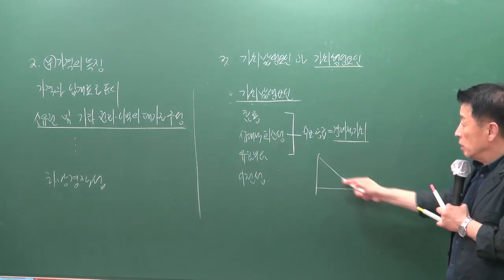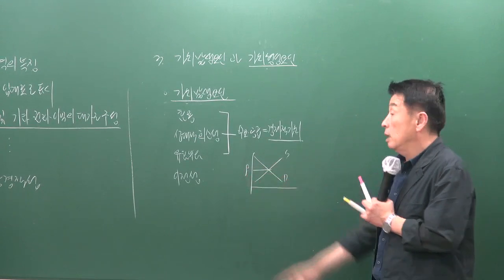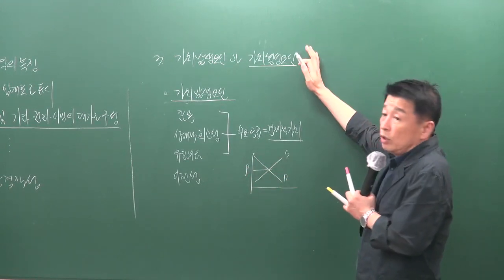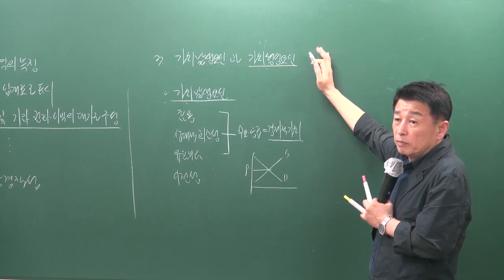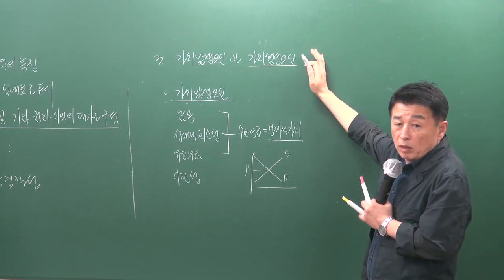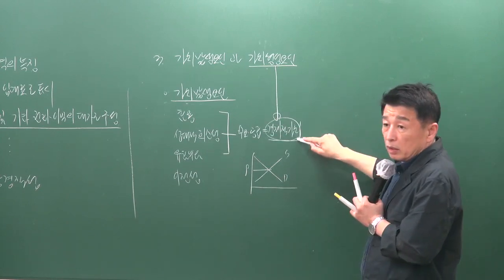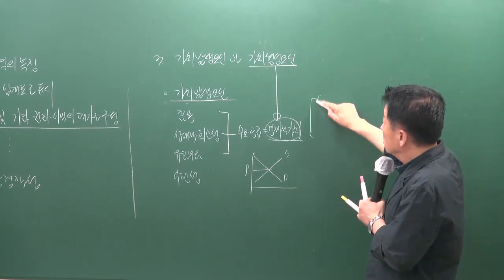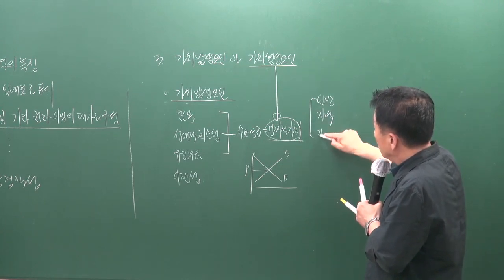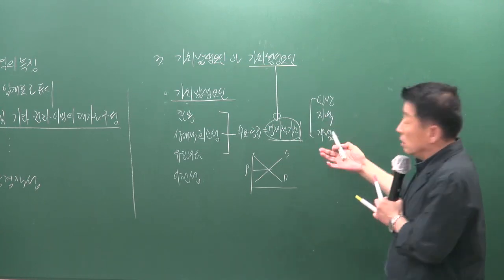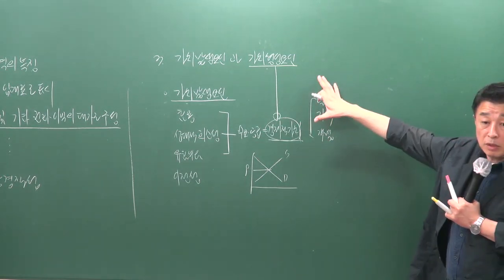기본적으로 재화의 가치는 수요와 공급의 상호작용에 의해 결정됩니다. 가치형성요인이란 부동산의 경제적 가치에 영향을 주는 요인으로, 일반 요인, 지역 요인, 개별 요인으로 구성됩니다. 이 가치형성요인은 감정평가 규칙상의 용어에 포함되어 있으며 시험에 출제되었습니다.